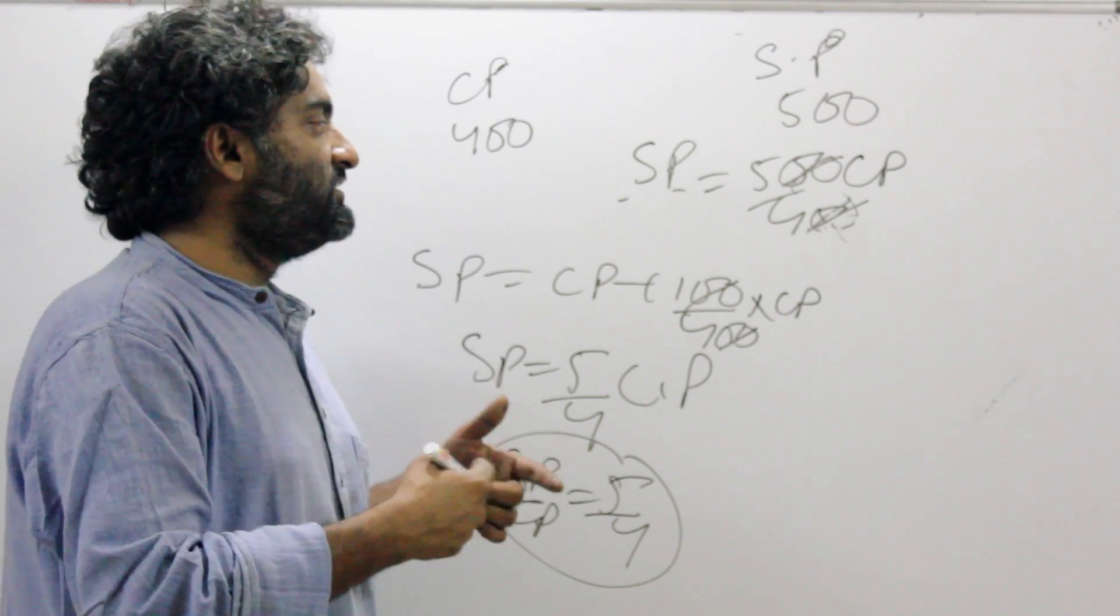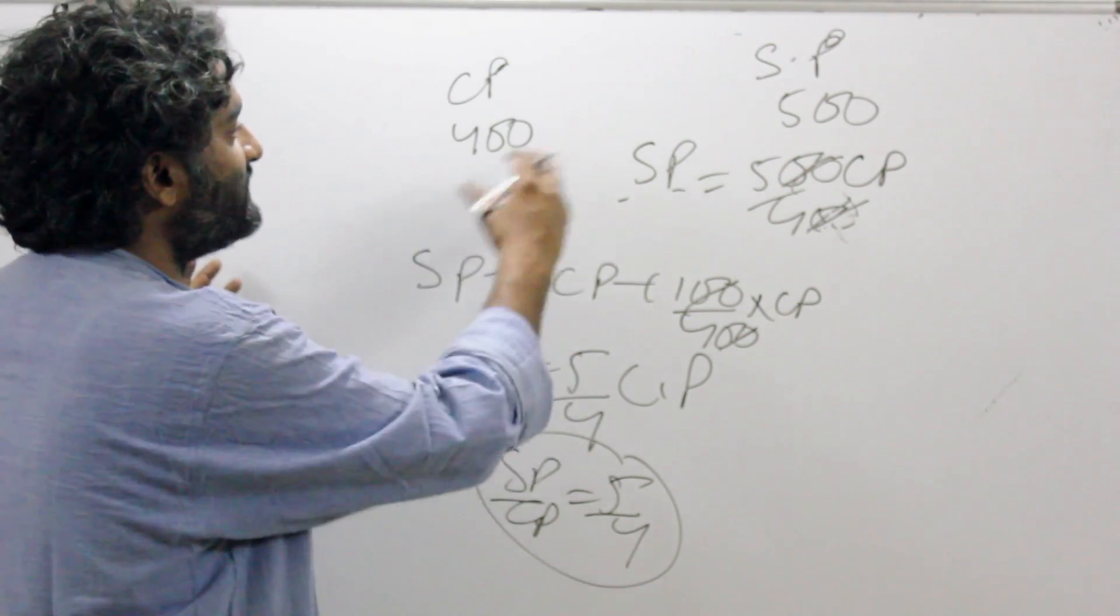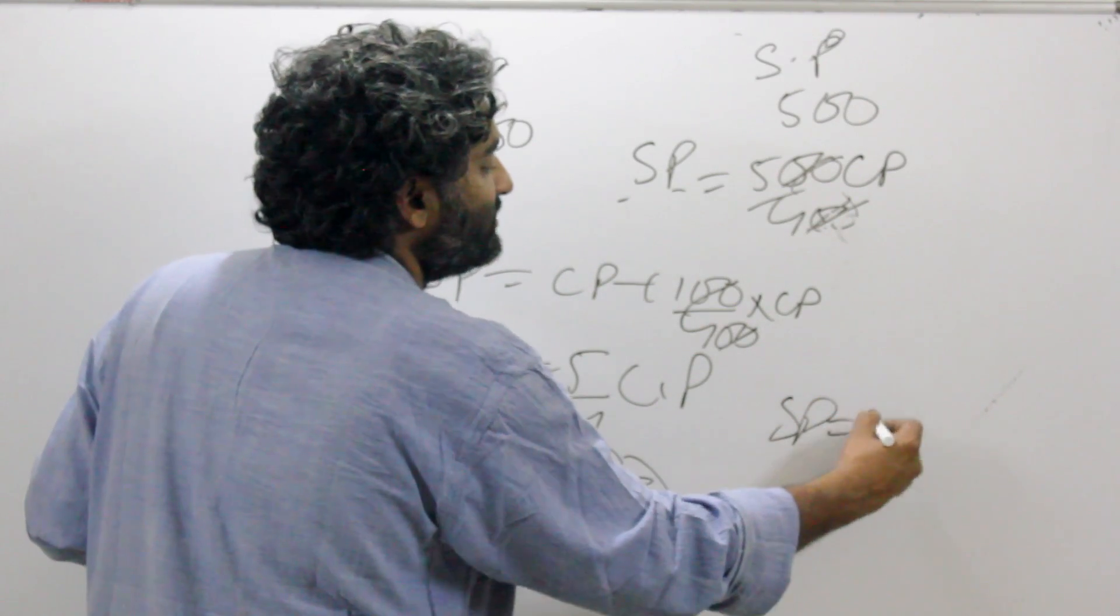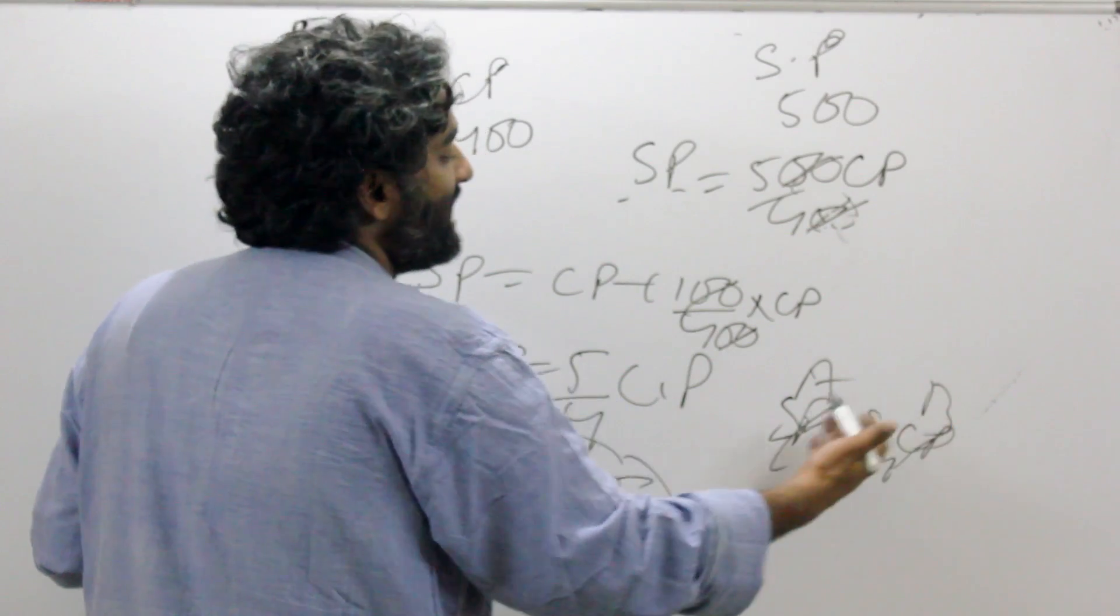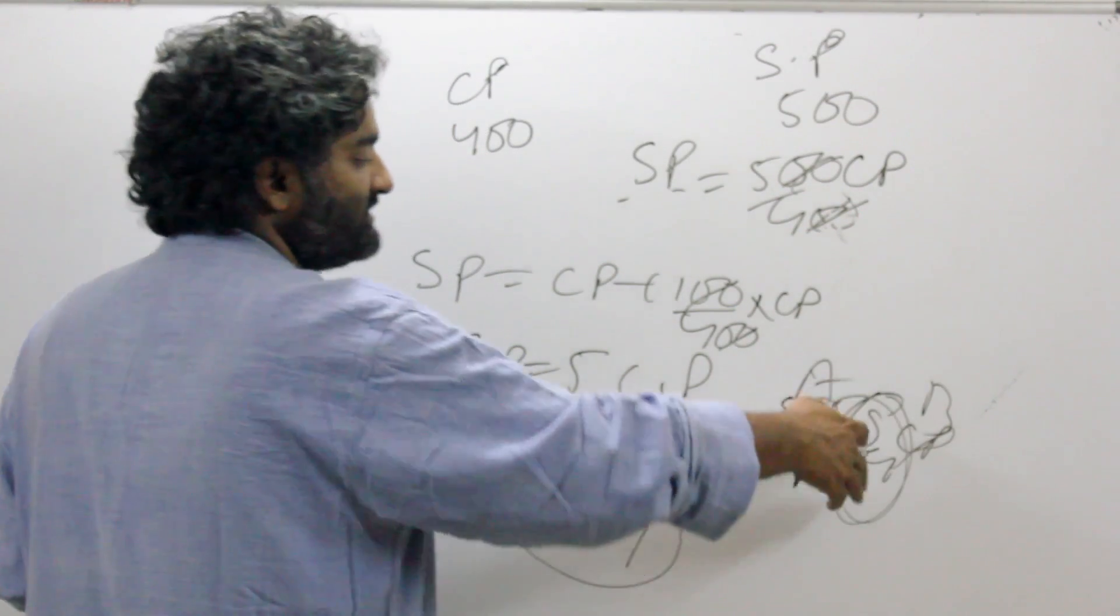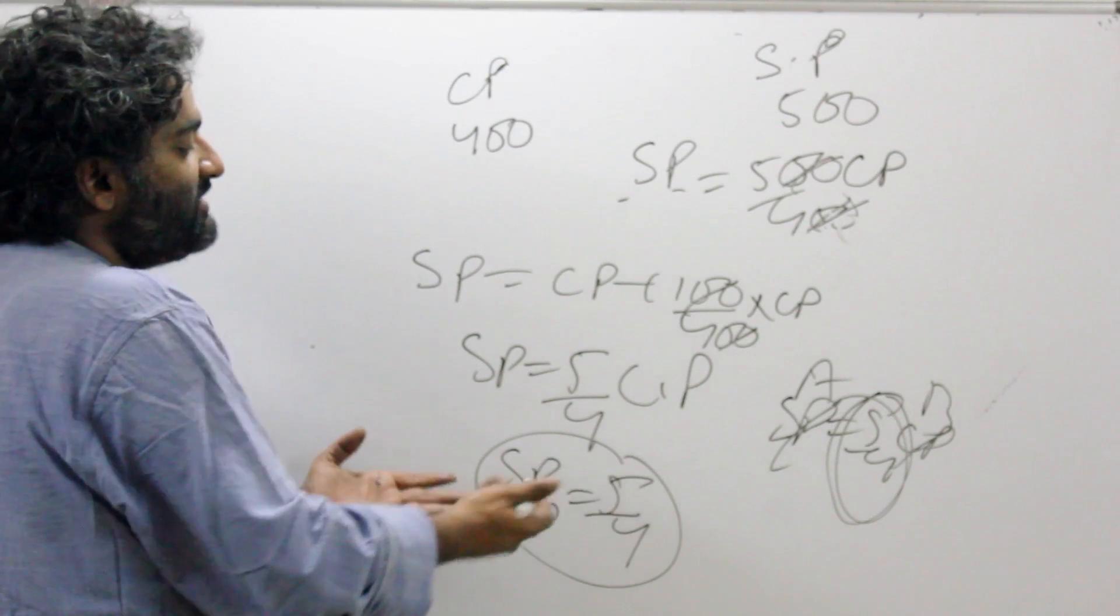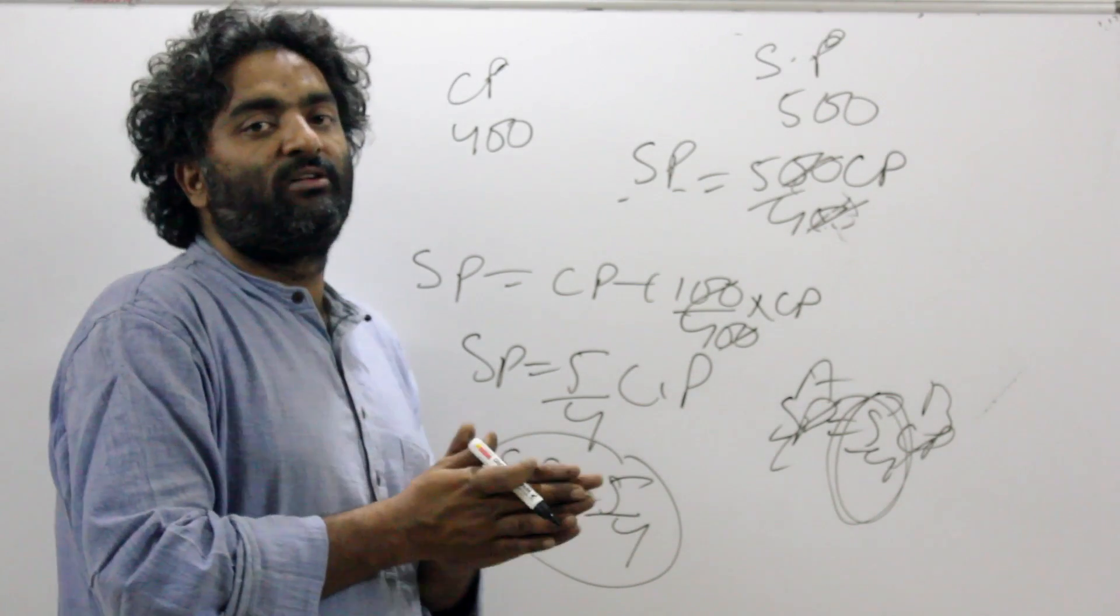So we'll explore this idea further. But if you notice that once again, if you have this kind of a relationship, it's just that instead of A and B, you have SP and CP, but otherwise the percentage operation is remaining the same. The fundamental relationship is not changing at all.